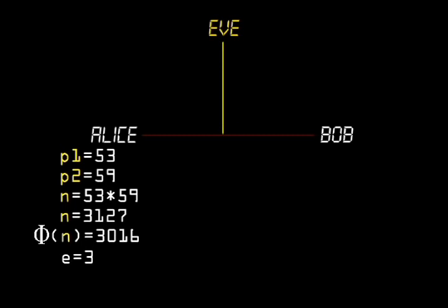Finally, she finds the value of her private exponent d, which in this case is 2 times phi of n, plus 1, divided by 3, or 2,011.